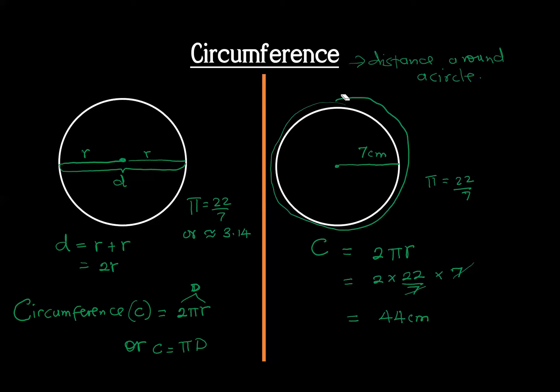So that's what we call circumference. In short, circumference is the perimeter of a circular figure — the distance around the circle is what we call circumference.